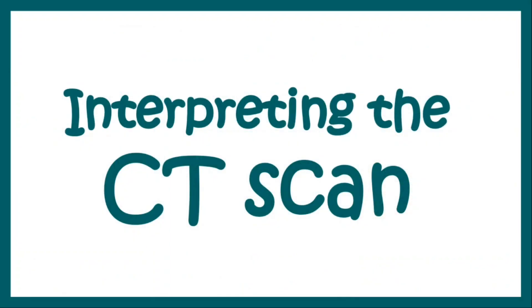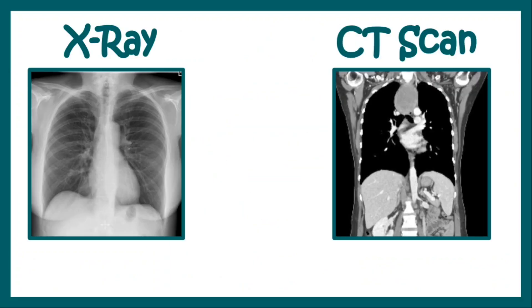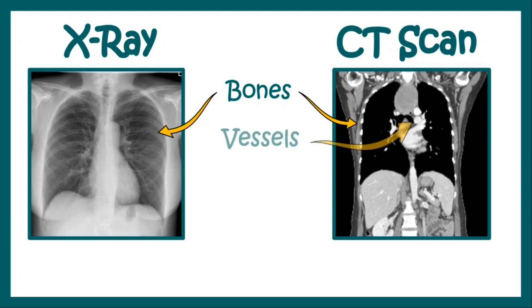Let us interpret the CT scan data. On the left-hand side we have an X-ray, and on the right-hand side we have a CT scan. In the X-ray, we can see bones mainly. Even though we get to see other soft tissues, the resolution is very poor. In the CT scan, we get to see bones as well, but apart from that, we also get to see vessels and soft tissue clearly. Hence, we require a CT scan.